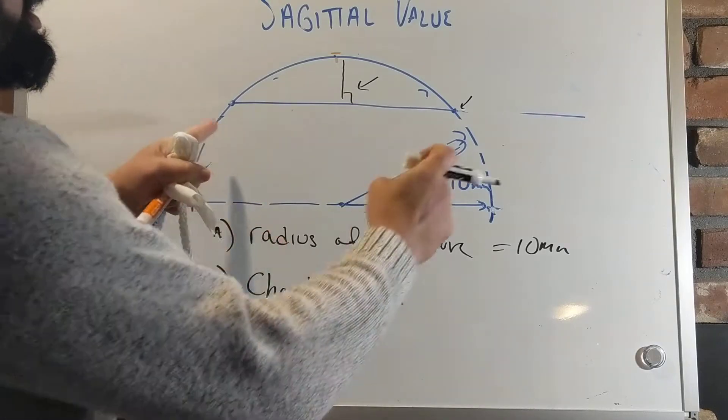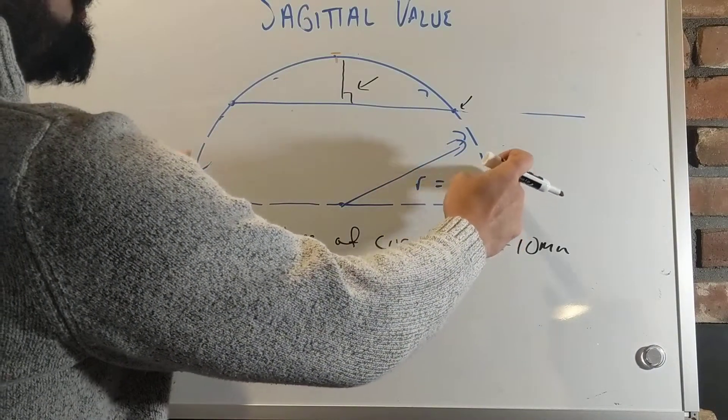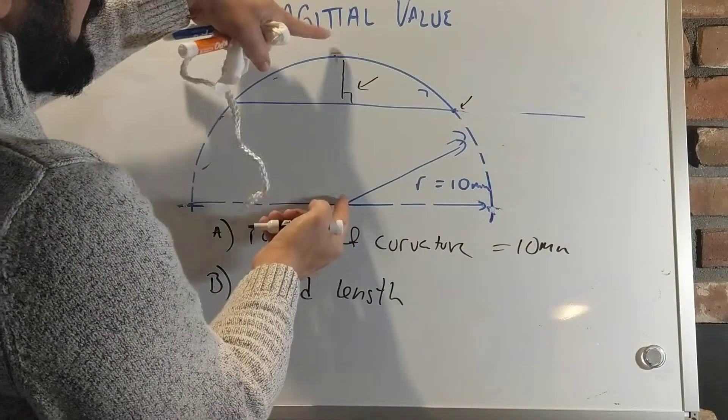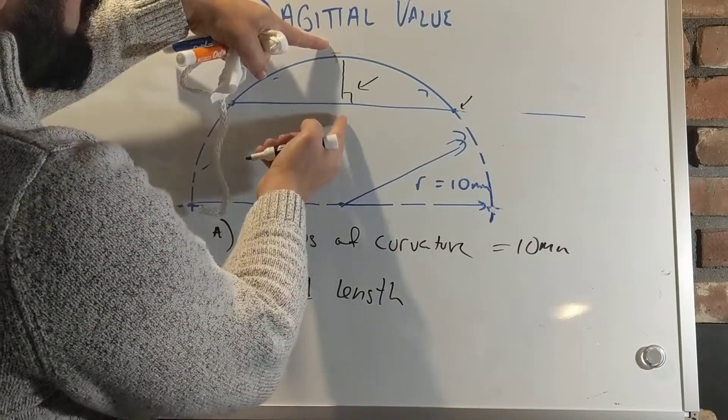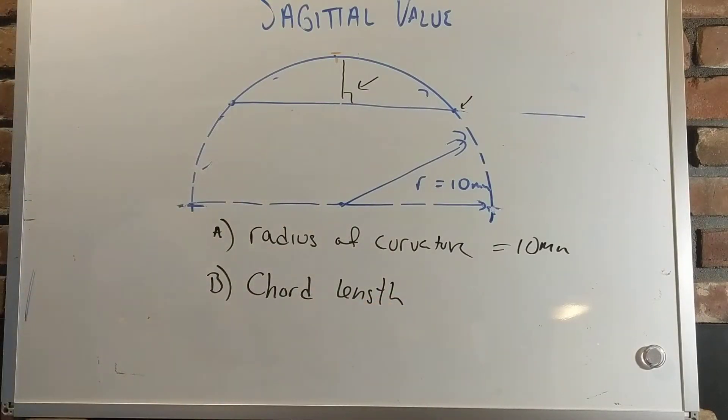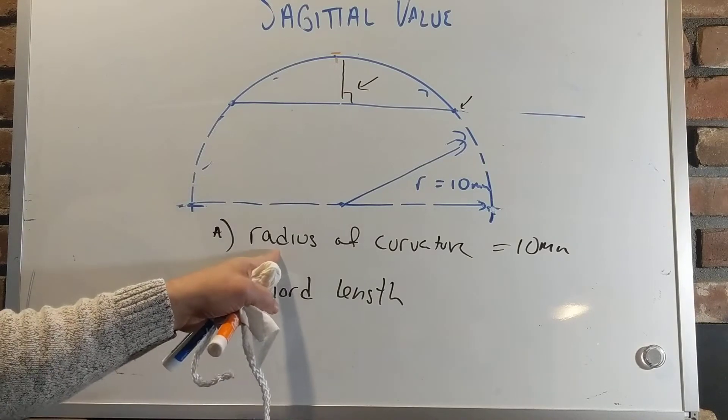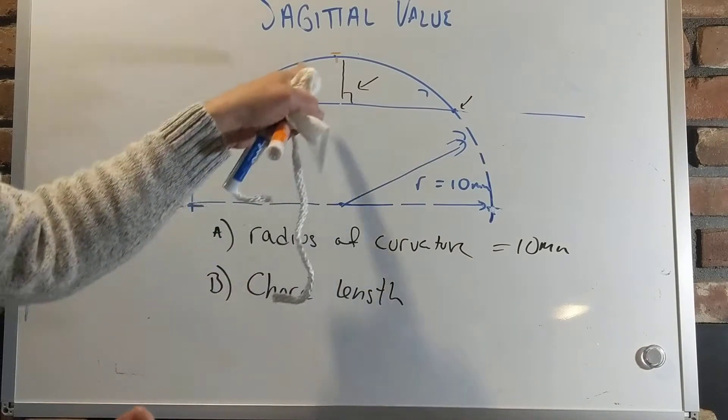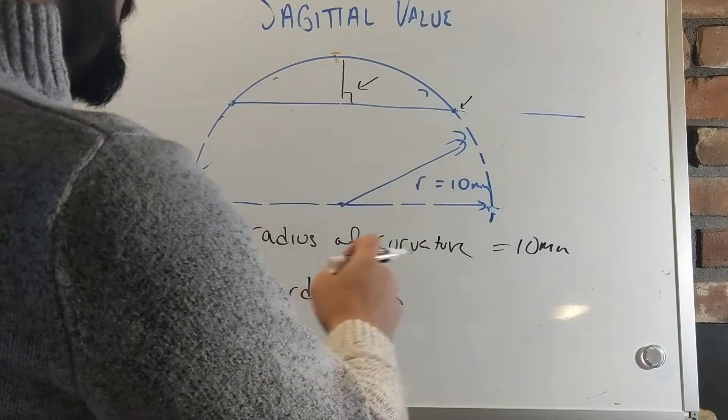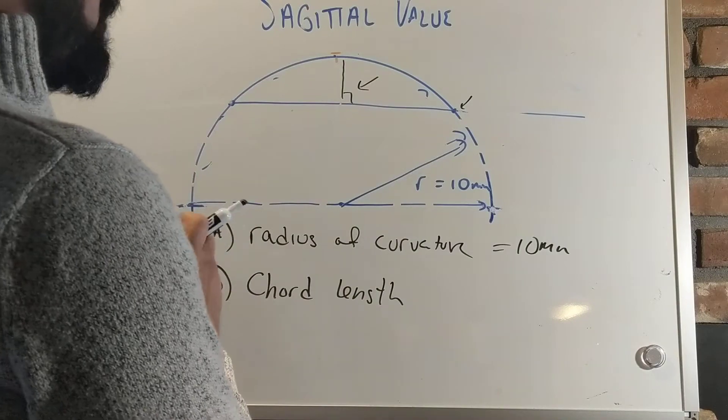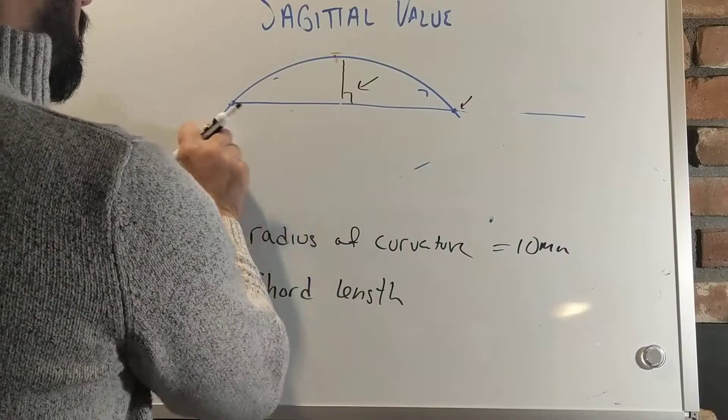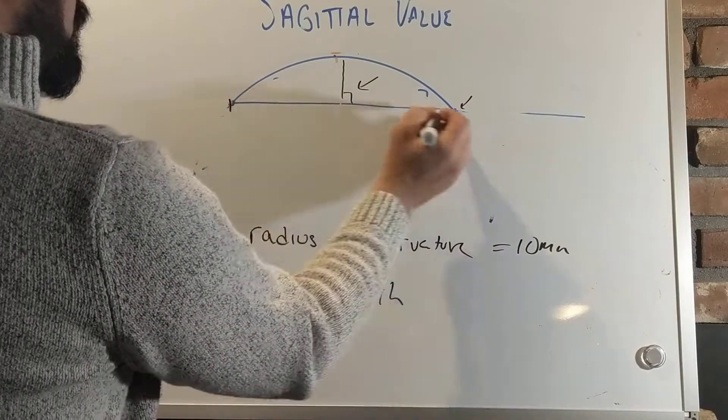The chord length, depending on how small I make it, if I make it smaller and smaller, you would imagine that the sagittal value will progressively get smaller as well. So you need the chord length as well. If you look at this like a contact lens, if you notice the radius of curvature is how steep the shape of your contact lens would be, and your chord length would be, well, for lack of a better word, it would be very similar to your chord length.